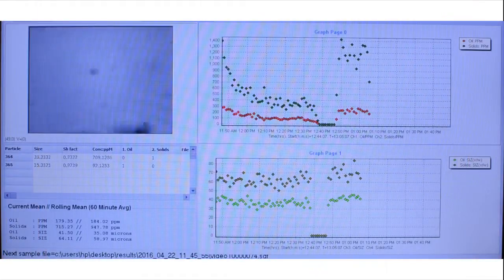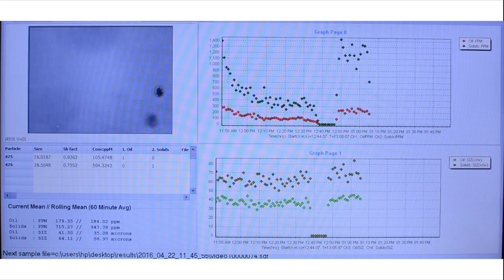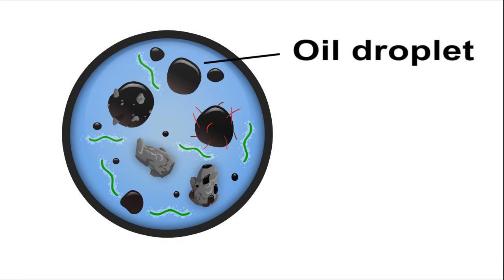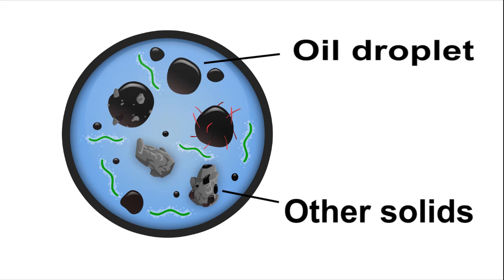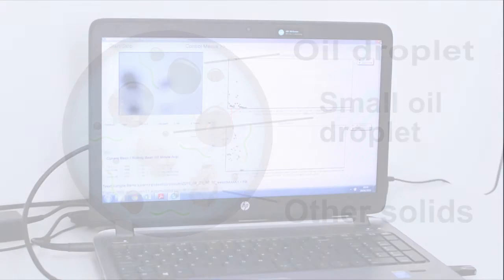Inside the particle sizer there's a thin channel that the flow goes through, and a camera across the channel which takes continuous video of the flow. Each frame then goes into the software on the computer, which looks at each image and figures out which are the dark spots — which are the oil particles — and using the shape and size it can determine what's oil and what's other solids, as well as the concentration and the size of the particles.